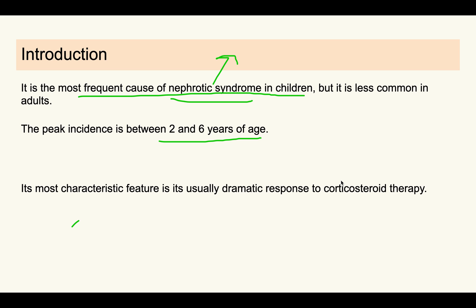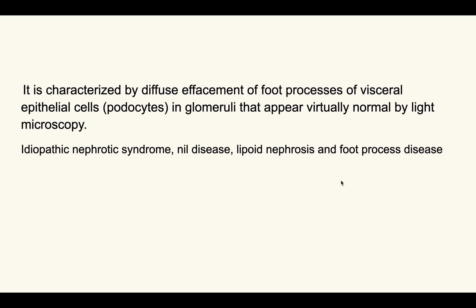A very characteristic feature of this disease is that whenever the patient is given corticosteroid therapy, there is a very dramatic response — the condition gets mostly treated after steroid therapy. Another important characteristic is that when we examine the glomeruli by light microscopy, we see no abnormality — the glomeruli appear virtually normal. However, on electron microscopy, there is effacement of the foot processes of the visceral epithelial cells, that is the podocytes.